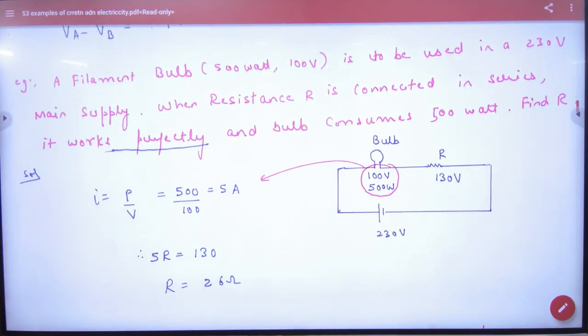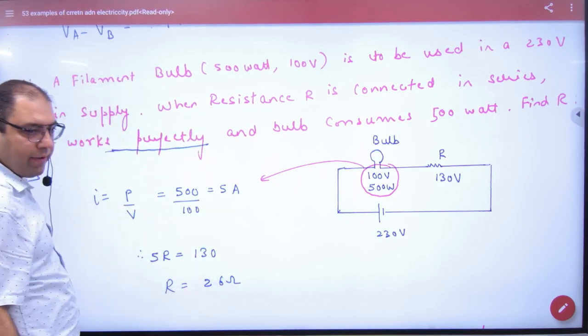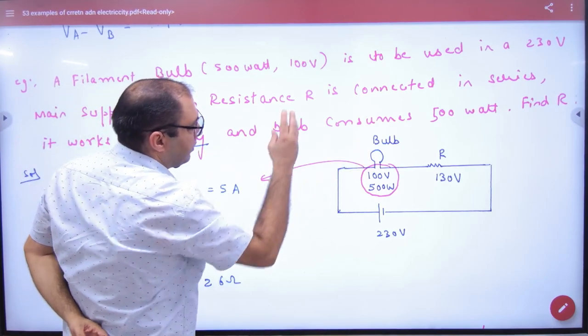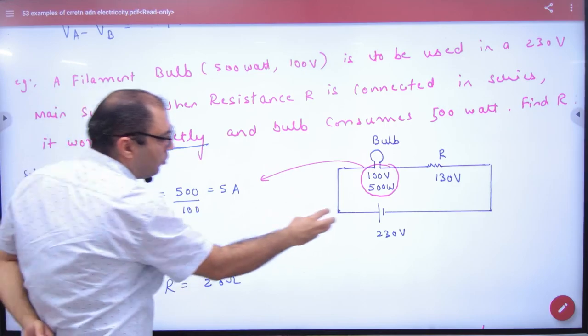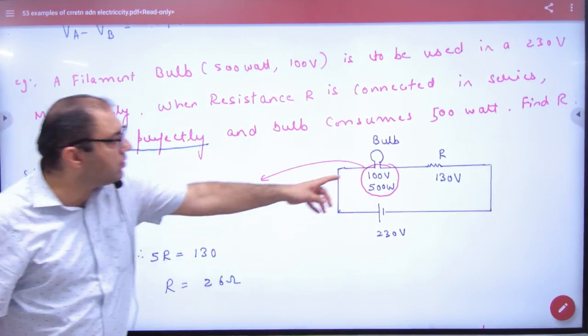Next question. A filament bulb, a bulb is 500W and it is 100V. It is to be used in 230V main supply. So it is 130V main supply. And the resistance are connected in series.